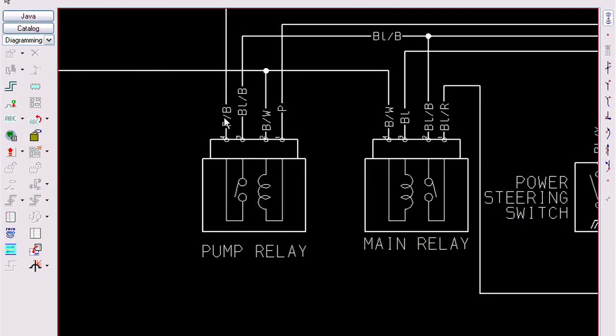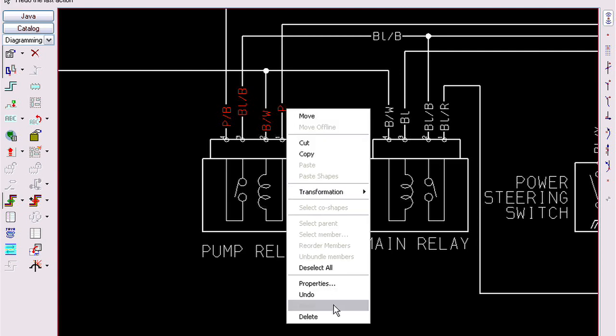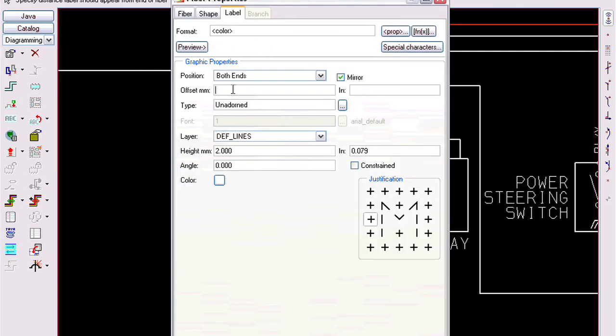RSD is a very exciting release. We've done a number of projects. The first project is to do with labels. When you place a label on a fiber—a fiber is a generic term for a wire, a pipe, or a cable—you can now control the distance of the label from the end of the fiber, either in English units or metric units.